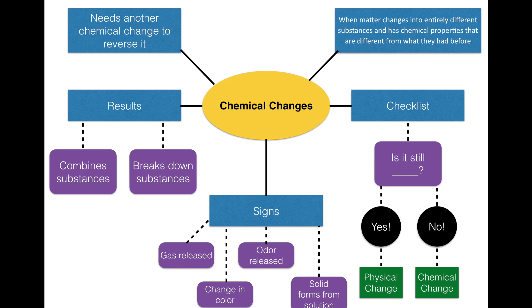Let's wrap up this lesson. Chemical changes are when matter changes into entirely different substances with different chemical properties. They generally result in substances being combined or broken down. Signs of a chemical change include: a gas being released, a change in color, an odor being released, or a solid forming from two solutions. Chemical changes are not easily reversed — you usually need another chemical change. And the checklist: ask 'Is it still blank?' For chemical changes, the answer is no — a new substance has been created. That's your lesson. If you have any questions, please let me know, and thanks for watching.